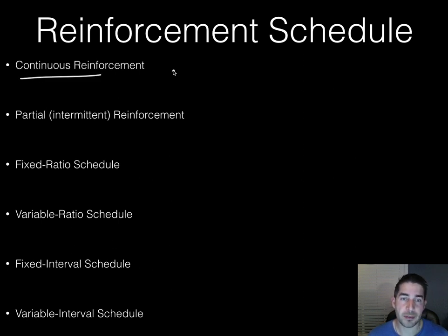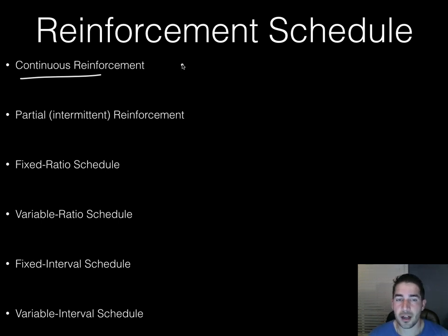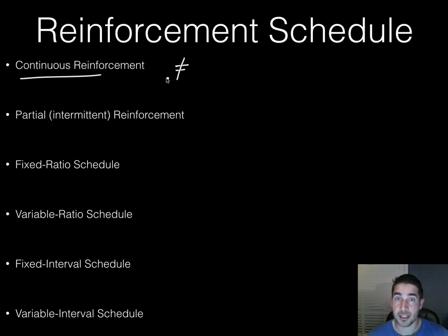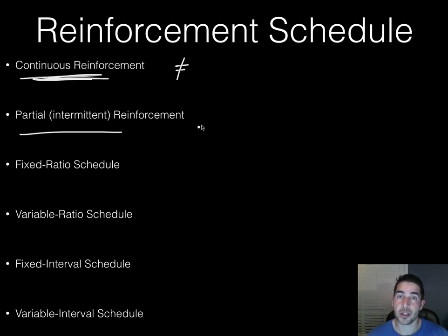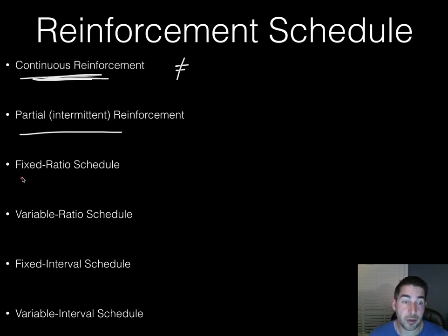Continuous reinforcement means every time you do the action, you get reinforced for it. This hardly ever occurs in the real world — a salesman doesn't always get a yes every time he tries to sell something. Intermittent or partial reinforcement means reinforcement occurs intermittently, either after a specific period of time or a specific number of times, which leads us to ratio and interval reward schedules.